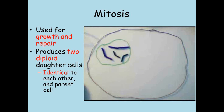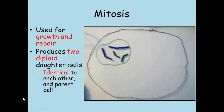Mitosis can be thought of as normal cell division. It's used for growth and repair, and produces two daughter cells identical to each other and to the parent cell. As we're looking here at normal body cells, we start with the diploid cell, meaning there are two copies of each chromosome, and end up with two identical diploid cells.